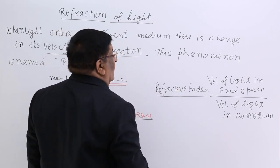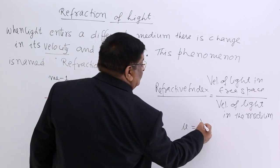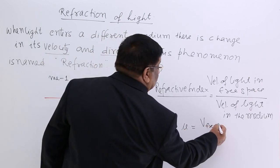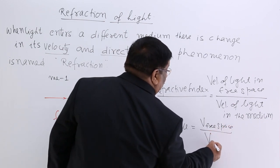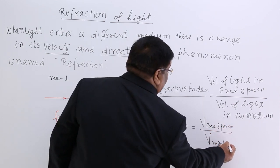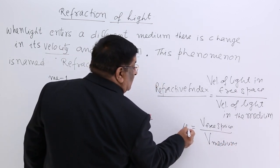Now this refractive index we have given a symbol, that is mu. V in free space divided by V in medium. And this we call mu of the medium.